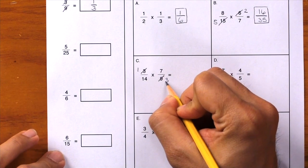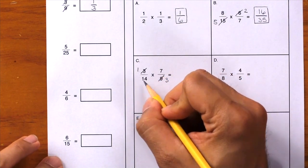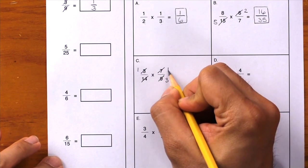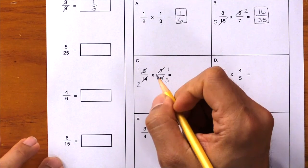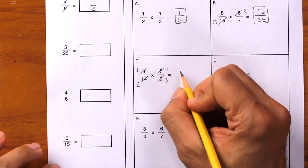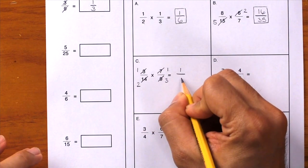We can also simplify the 7 and 14. Divide by 7, divide by 7, and we have 1 and 2. Now let's go ahead and multiply: 1 times 1 equals 1, 2 times 3 equals 6. Write it down and box your final answer of 1/6.